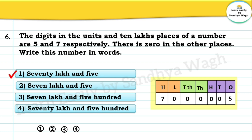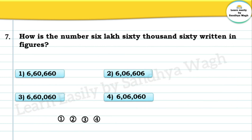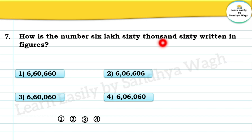Now let's see the next question: how is the number 6,00,60,000 written in figures? In the crores place we write 6, in the ten thousands place we write 6, in the thousands place we write 0, in the hundreds place we write 0, in the tens place we write 6, and in the units place we write 0. The correct option is option number three.